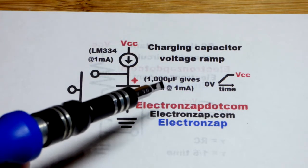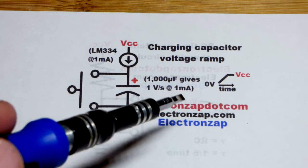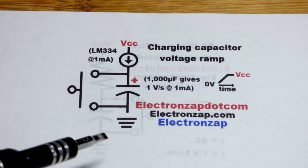And with a 1,000 microfarad capacitor, that means for each second, as long as you're giving it one milliamp of current, it'll go up one volt, one volt per second.